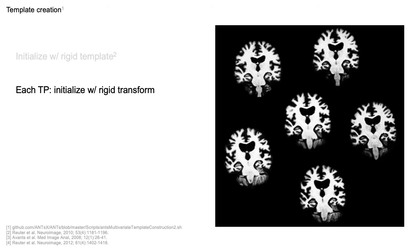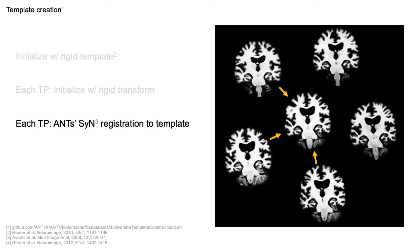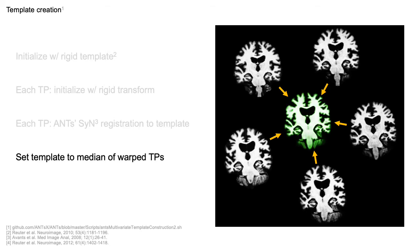To create the base image, we use ANTs multivariate template construction adapted to perform nonlinear registration only. The process is initialized with a rigid template. First, each time point is initialized with a rigid transform to this common space. Second, it is individually and nonlinearly registered to the current template using ANTs. Third, we update the template to be the voxel-wise median of the warped time points, and this process is repeated a number of times.